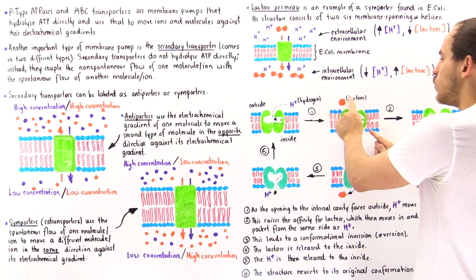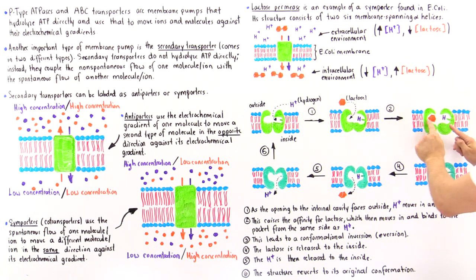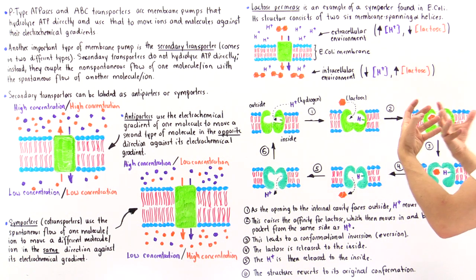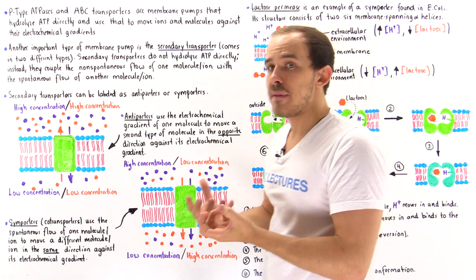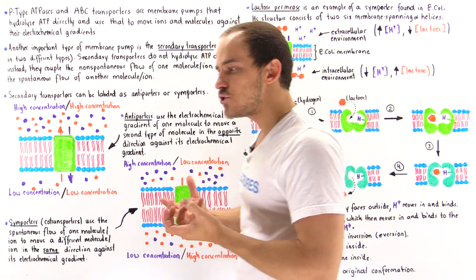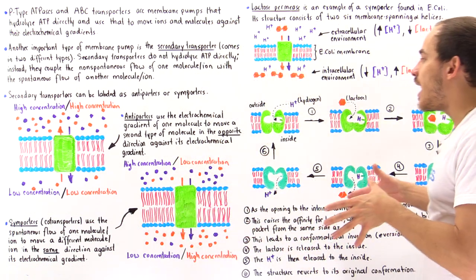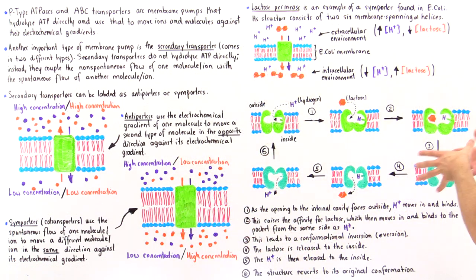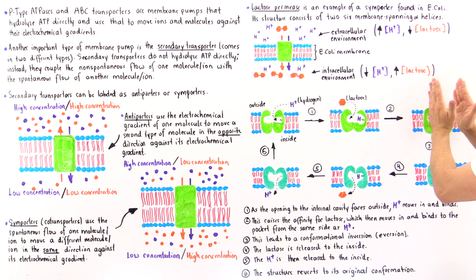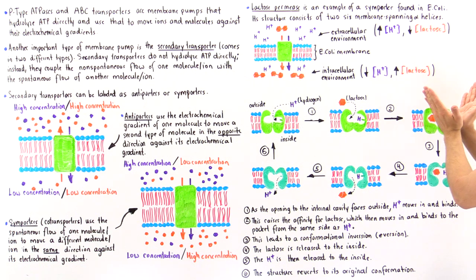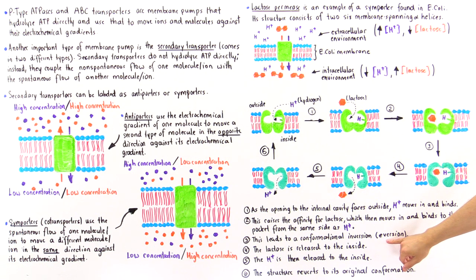Once lactose moves into the pocket, it creates an overall conformational change that inverts the entire structure of that particular membrane protein. This inversion is also known as an eversion.